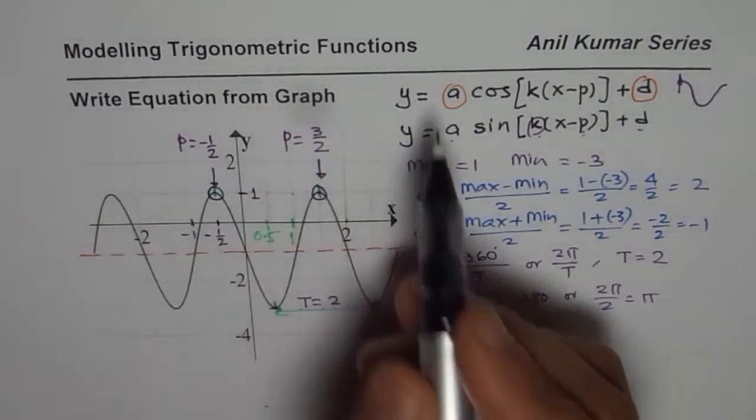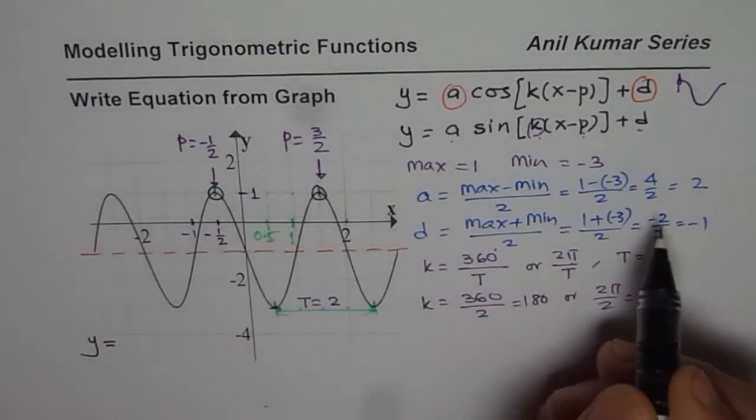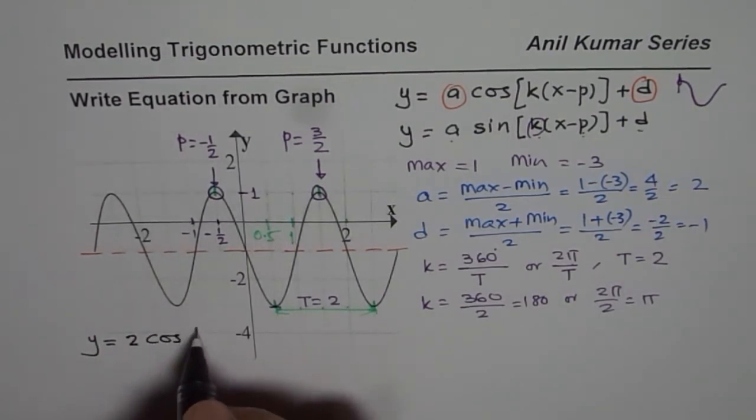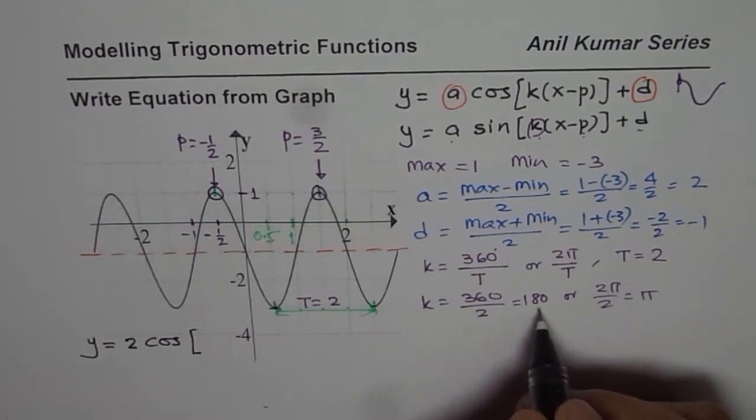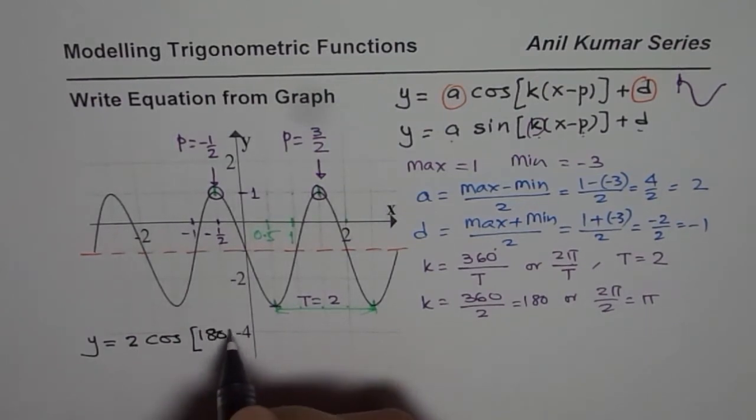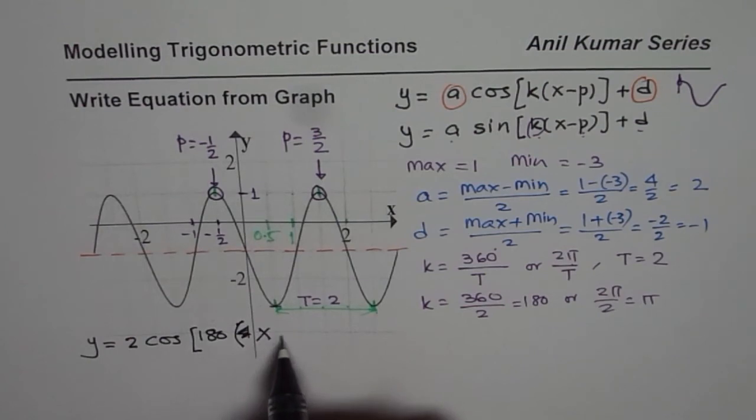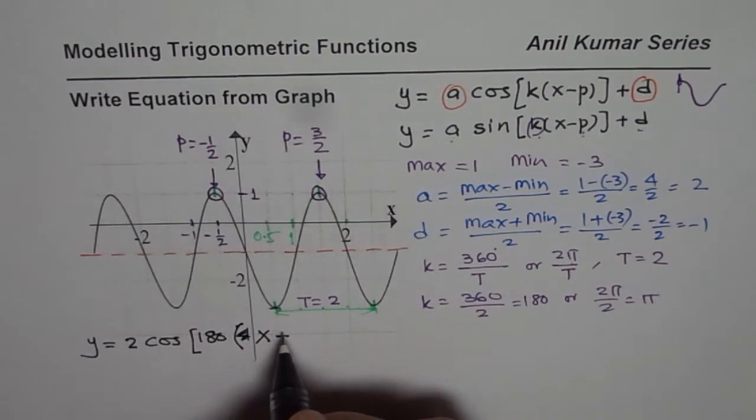So let me write down the equation in cosine first. So y equals, a is 2 for us, cos. k we calculate. So let me write the equation in degrees. So we will write 180. Let me just put brackets. And then we have x minus P. If I am using this point, minus of minus P comes plus, we get plus half.